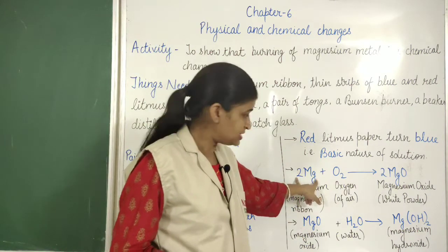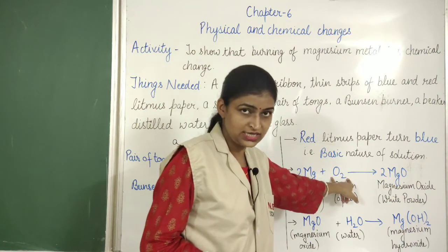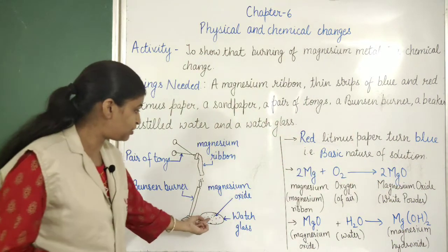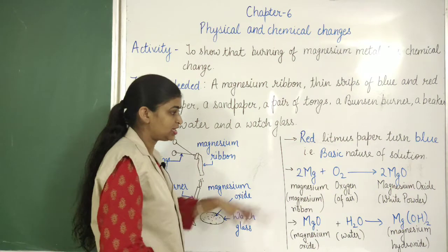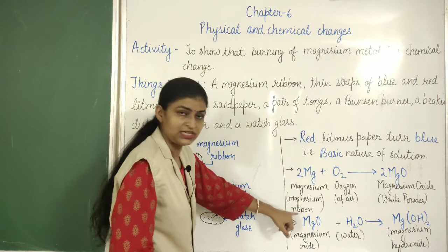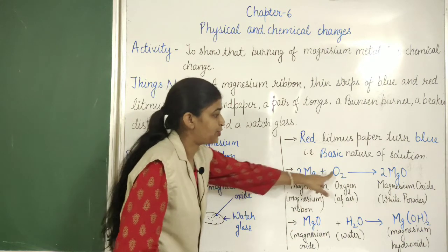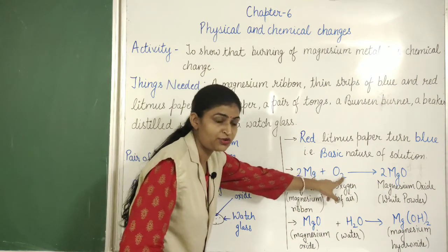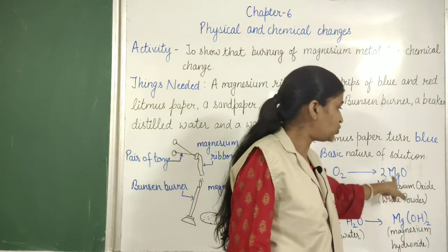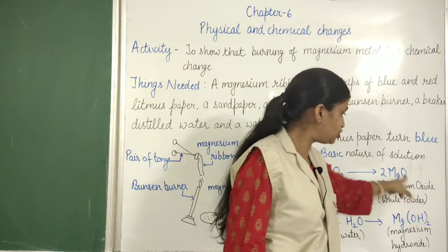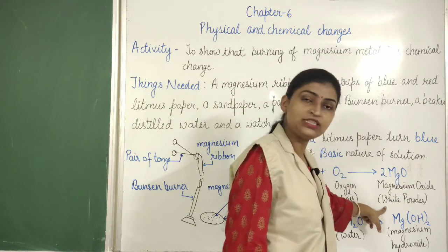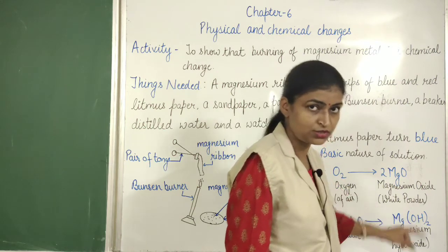Magnesium reacted with oxygen present in the air and formed magnesium oxide. This white powder is magnesium oxide. In the equation: 2Mg — where Mg means magnesium, that is the magnesium ribbon — reacted with O2, which is the formula for oxygen present in the air, giving us 2MgO. 2MgO means two molecules of magnesium oxide. This magnesium oxide is in the form of white powder.